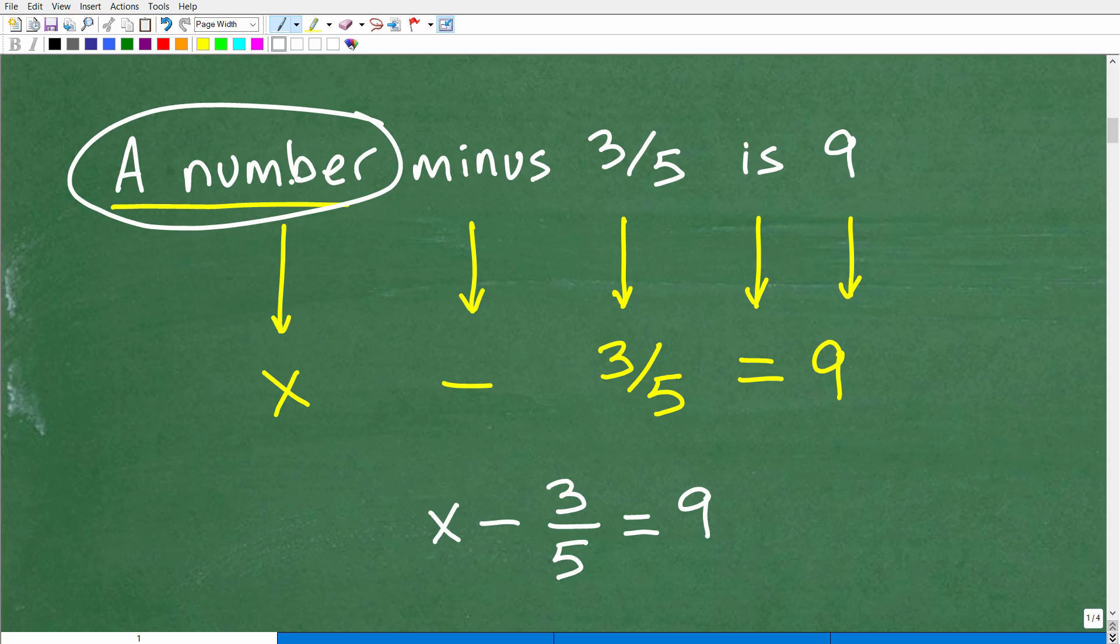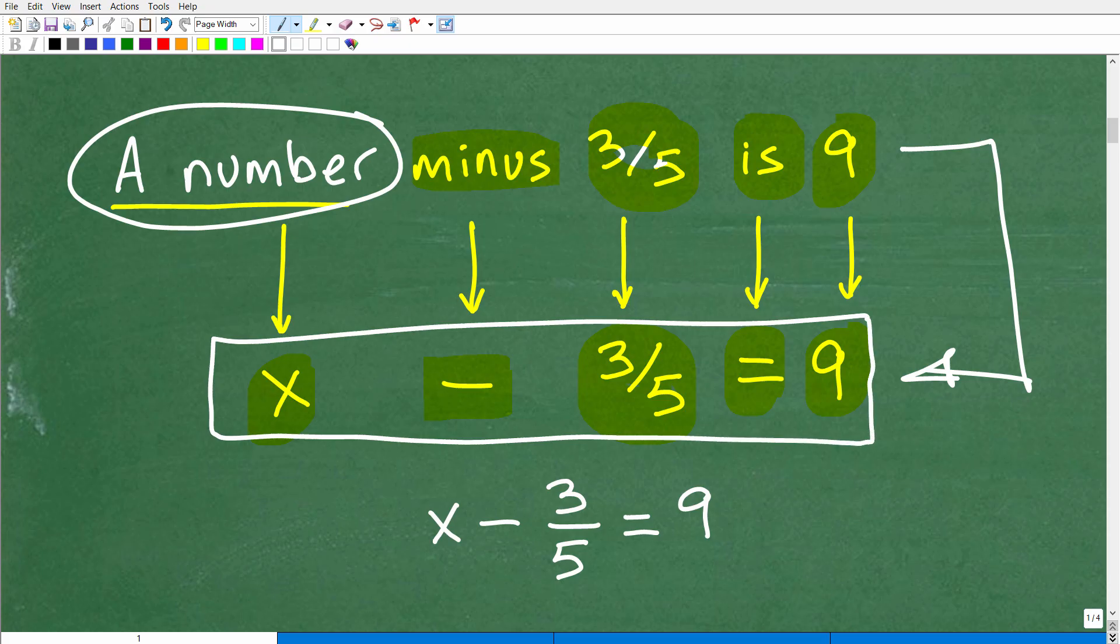So we're just going to go through and translate word by word this verbal phrase into an algebraic equation. So a number, again, we're going to put X minus. Well that's pretty easy, that means the minus sign. We're talking about subtraction here. So a number minus what? Three-fifths. Well, we'll put three-fifths. So we got a number, some number, minus three-fifths is. Anytime you see the word 'is', that means equal or equal to. So a number minus three-fifths is or is equal to, so we'll put the equal sign there. Is equal to what? Nine. Is nine. So we put a nine there. So now we translated this verbal phrase or sentence into a variable phrase or sentence or equation, an algebraic equation. So we have X minus three-fifths is equal to nine.